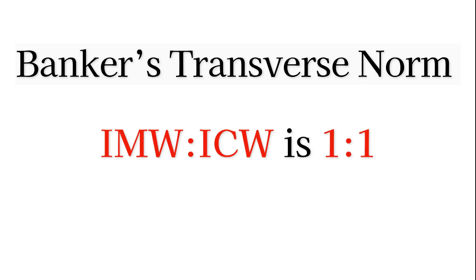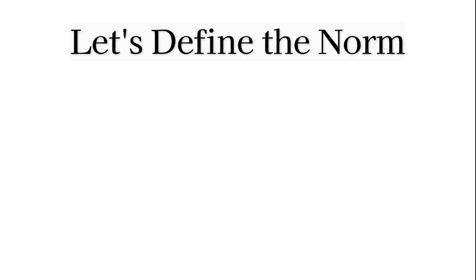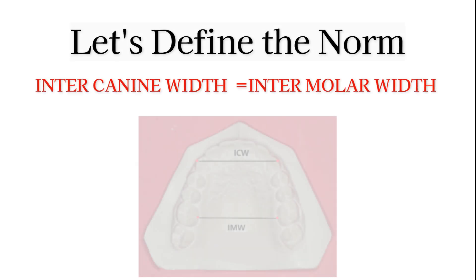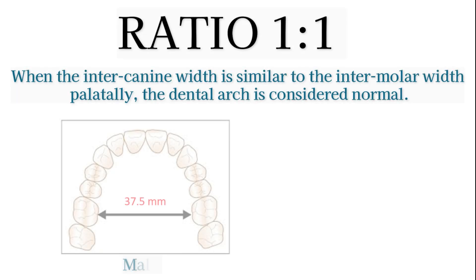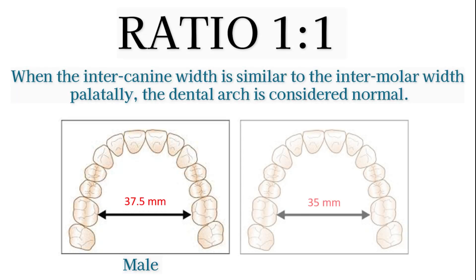Let us look at the Banker's transverse norm. When the intercanine width is the same as the intermolar width — a one-to-one ratio — it is a normal arch in the transverse dimension.